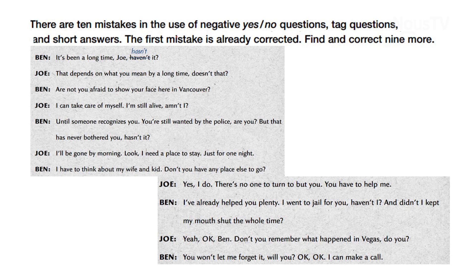You, but that has never bothered you, has it — isn't it? The mistake: you have a negative tag, so the tag should be affirmative — 'has it'. Joe, I will be gone by morning. I need a place to stay just for one night — no mistake there, it's correct. I have to think about my wife and kids. Don't you have any place else to go? — no mistake there either.